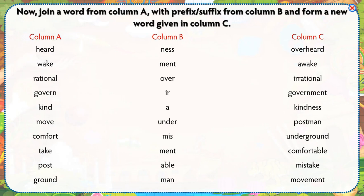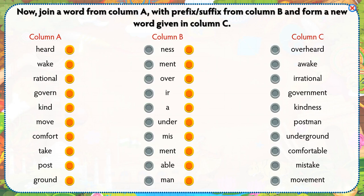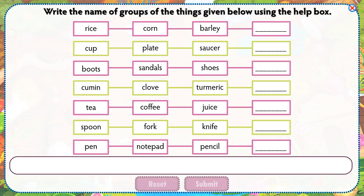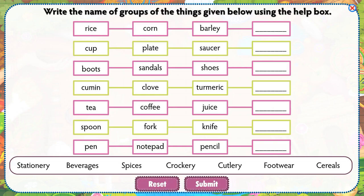Now, join a word from column A with a prefix or suffix from column B and form a new word given in column C. Write the name of groups of the things given below using the help box.